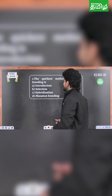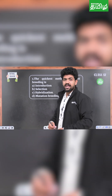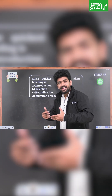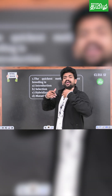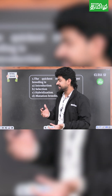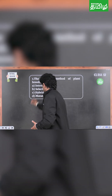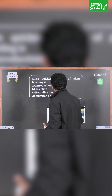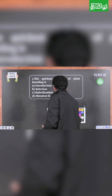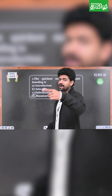First question: The quickest method of plant breeding. Plant breeding is very easy. Mutational breeding is very easy — if you have a sudden change, mutation breeding is the easiest answer.